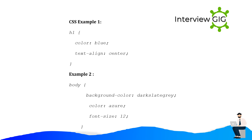CSS Example 1: h1 { color: blue; text-align: center; }. Example 2: body { background-color: dark-color; color: azure; font-size: 12; }.